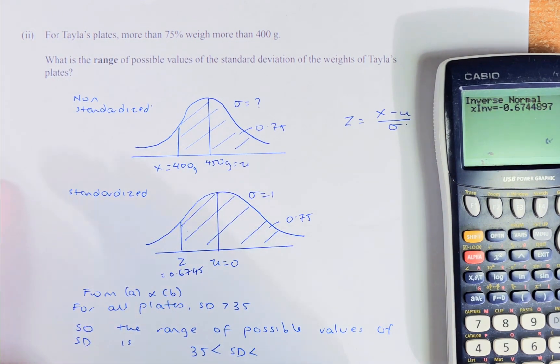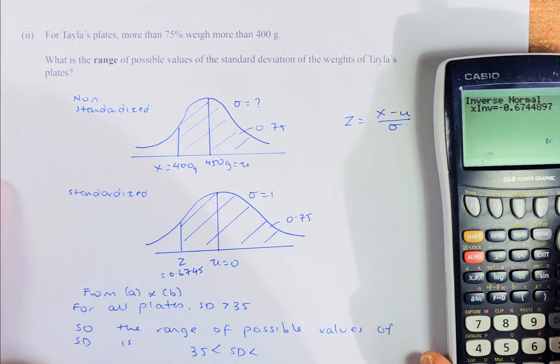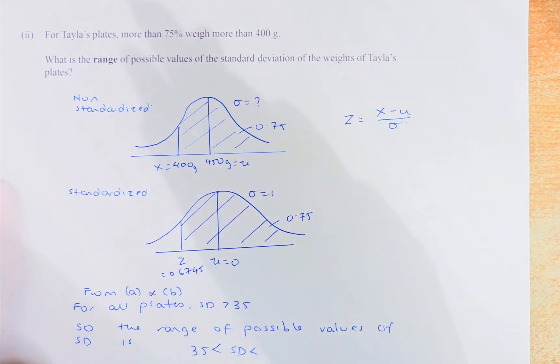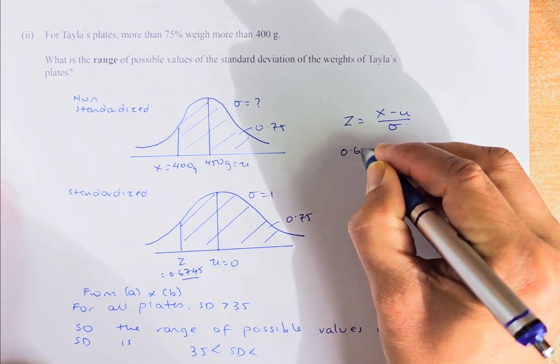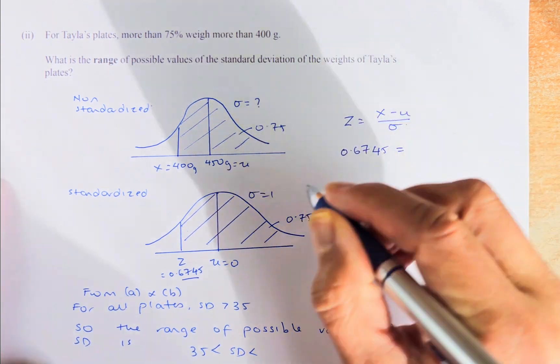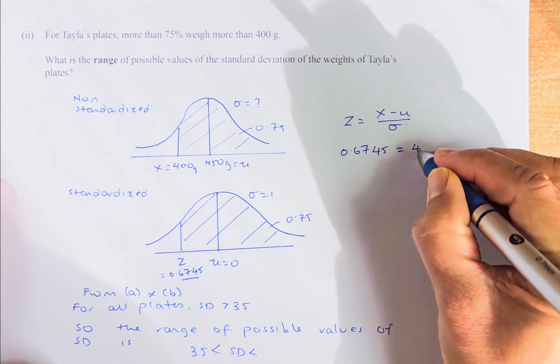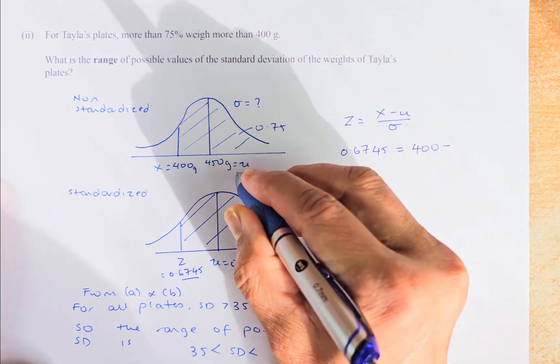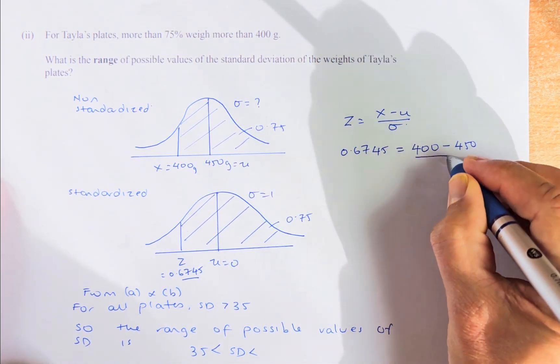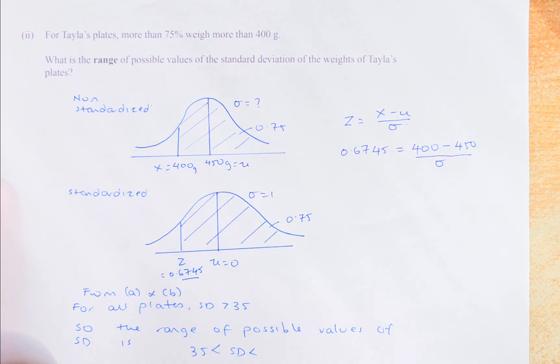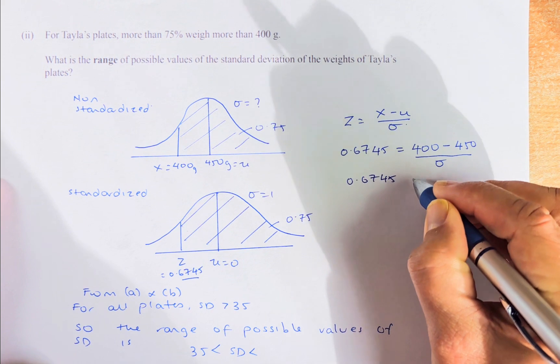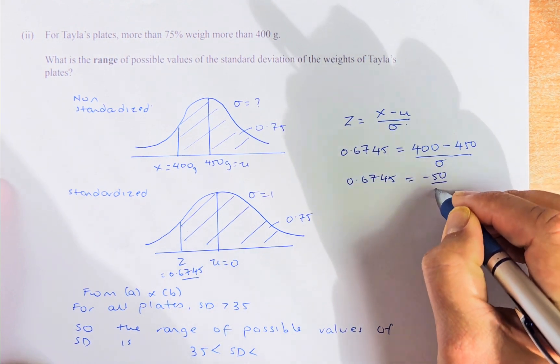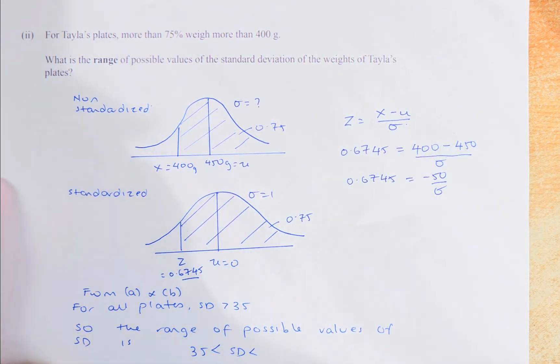Once you have found your Z value, you have to find your sigma by using this formula. Now I'm going to get rid of this calculator so that you have more space. Now your Z is now replaced by this number 0.6745. That is equal to X. X is 400. Minus mu is 450. And then your sigma is what you're going to find. Now we're going to simplify them.